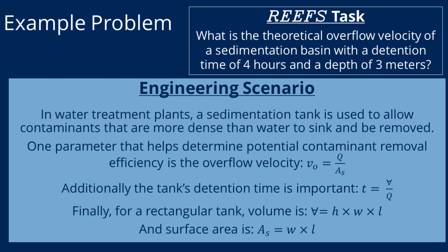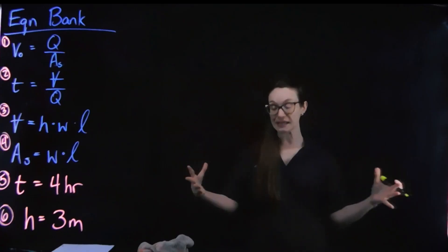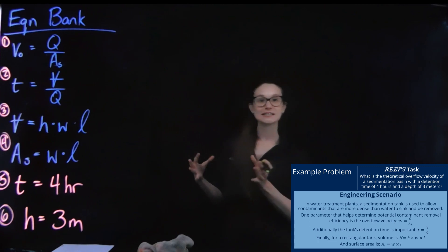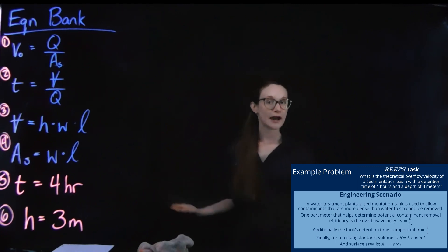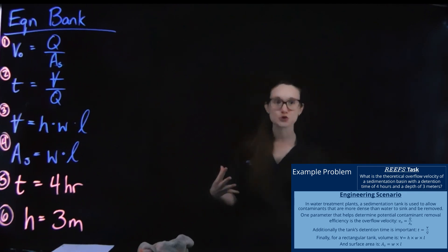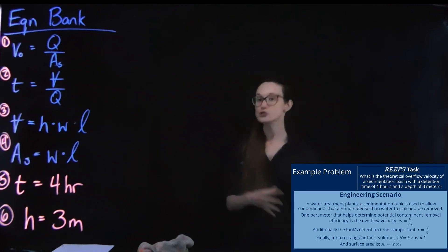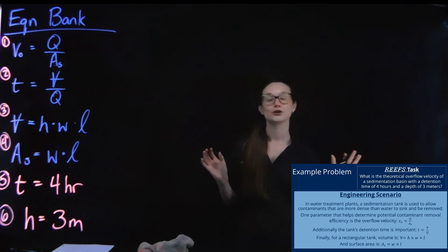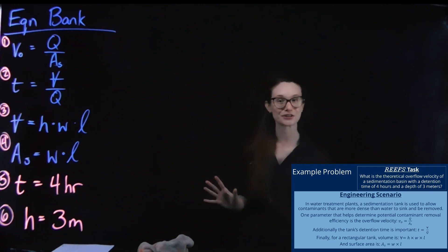One system that environmental engineers design is what we call a settling tank or a sedimentation basin. These are used in water and wastewater treatment plants in order to allow contaminants generally that are denser than water to sink under the force of gravity. Now, this is actually a reasonably energy efficient way to separate contaminants because I don't have to use a whole bunch of external energy sources, pumps and cyclones and stirring mechanisms. It just uses gravity, which is sort of naturally occurring from the potential energy in those heavy particles.